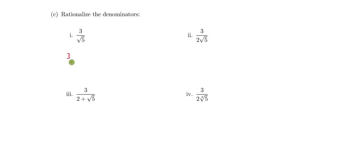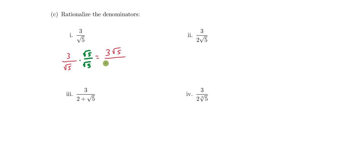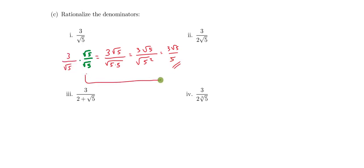The idea is to take the radical term in the denominator and multiply it by something to give us a perfect nth root. In the denominator I have the square root of 5, so I multiply by the square root of 5 over the square root of 5. In the numerator we get 3 times the square root of 5, and in the denominator by the product property we get the square root of 5 squared, which equals 5. So the result is 3 square root of 5 over 5.